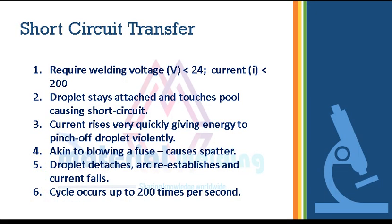The next mode of transfer is short circuit transfer, also called dip transfer mode. This mode requires welding voltage less than 24 V and current less than 200 amperes. The droplet stays attached and touches the pool, causing a short circuit. Current then rises very quickly, giving energy to pinch off the droplet violently — similar to blowing a fuse — causing spatter. The droplet detaches, the arc reestablishes, and current falls. This cycle occurs up to 200 times per second.